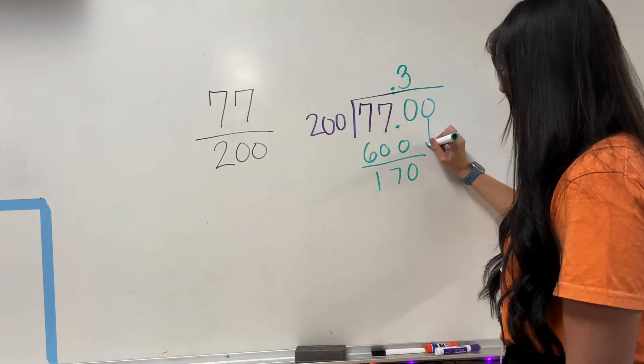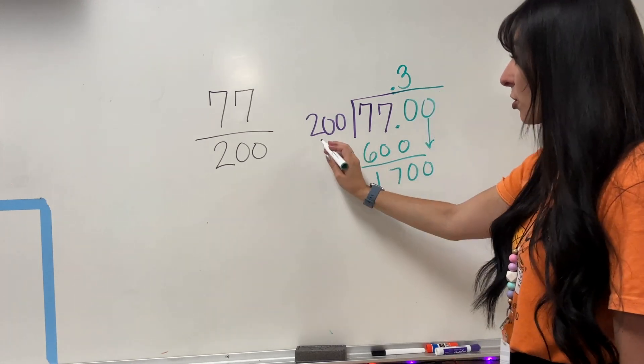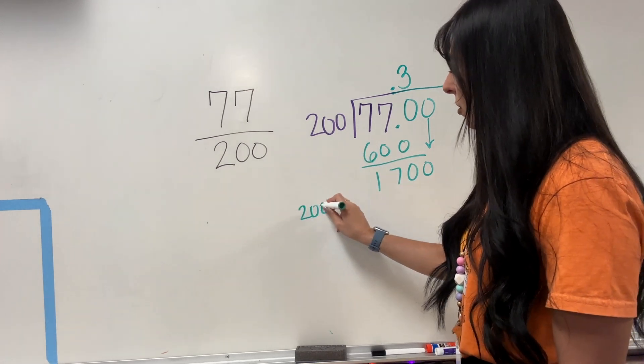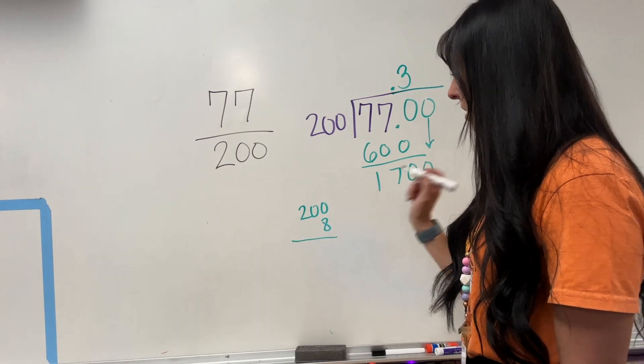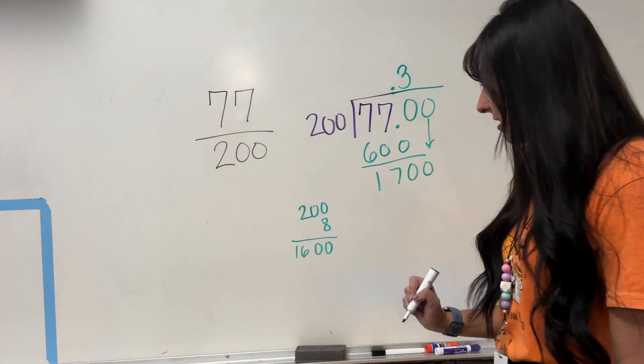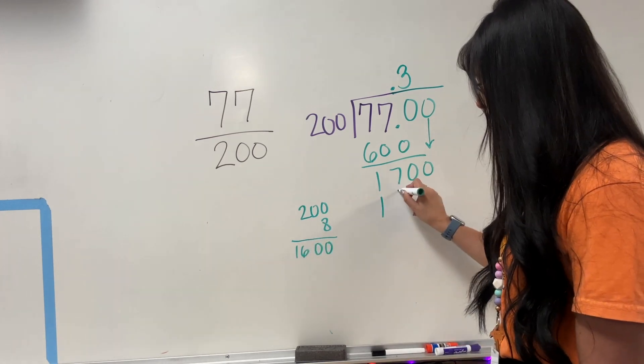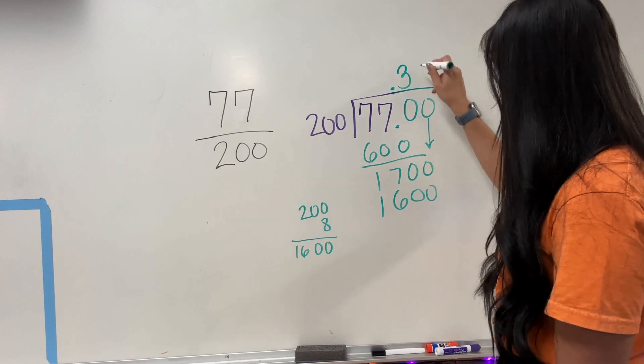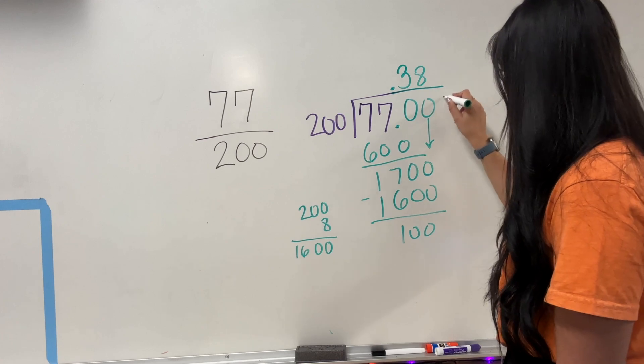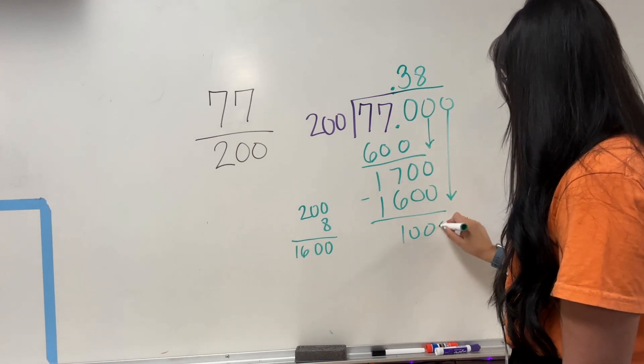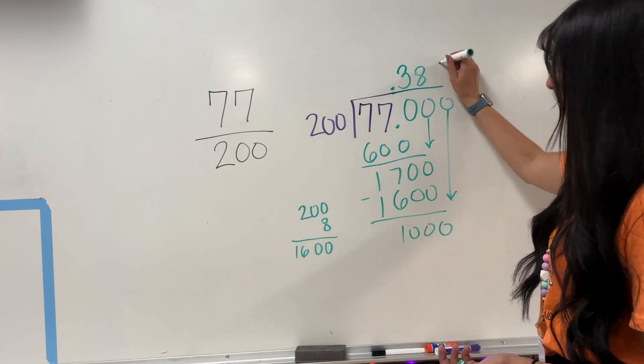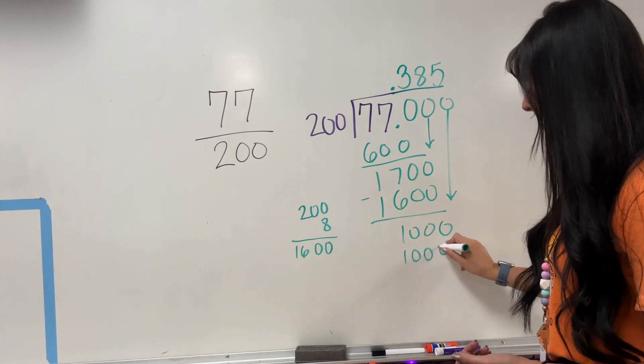Add another 0, bring it down. How many times does 200 go into 1,700? So let me try 200 times 8. That's going to be a 0, 0, 0. And I have 16. That's close enough. And that's with 8. Take away, and I have 100 left. Add another 0, and 200 goes into 1,000 five times, which will be exact.